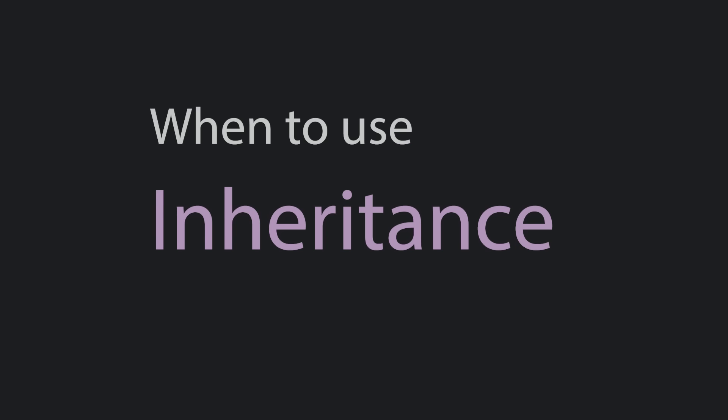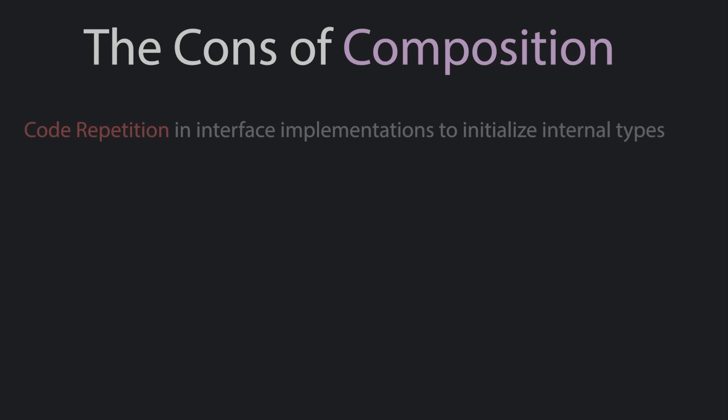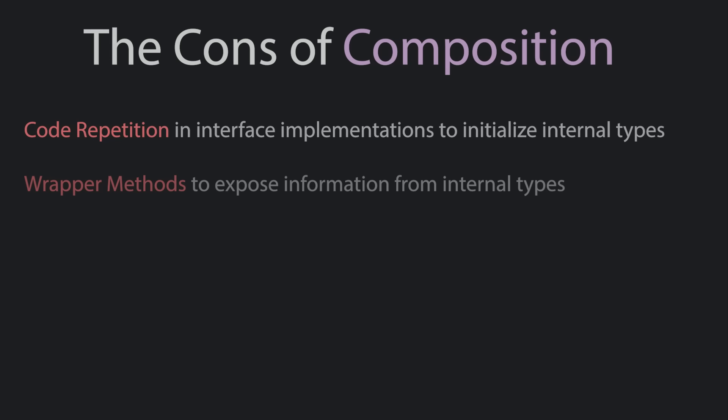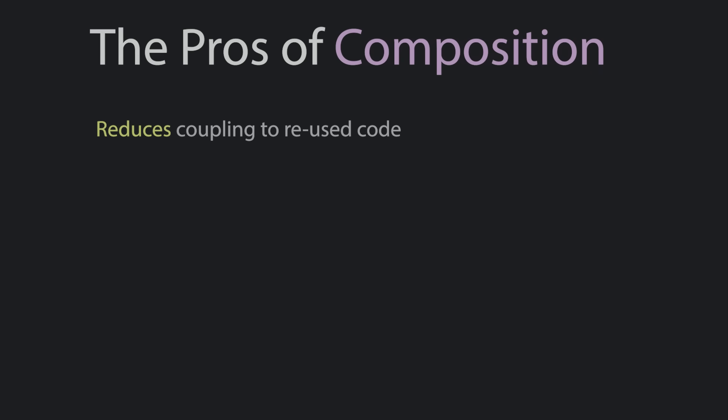I won't say that inheritance is as evil as some would say, but I will say that I almost never use it in my code. Composition isn't perfect — you do end up with a lot of boilerplate, needing to initialize all of your internal types. Many implementations will contain the same code repeated. And when you need to expose information from reused code, you often need to create a lot of wrapper methods where you simply return a call to an inner type. But ultimately, composition reduces the surface area between objects, which gives you less friction as changes come in.